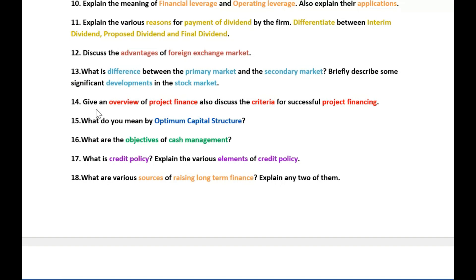The next question is on overview of project finance and discuss the criteria for successful project financing. The next question is on optimum capital structure and objectives of cash management. The next question is on credit policy and what are the elements of credit policy. The next question is on sources of raising long-term finance. Explain any two of them.